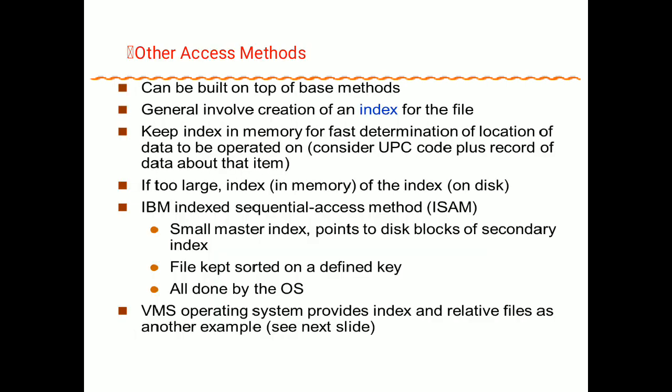Along with sequential and direct access methods, there is another method called the index method to access files. This index method is very similar to the index at the back of a book. We build an index on top of the file, which generally involves creation of an index for the file. The index is kept in memory for fast determination of the location of data to be operated on — just like searching a topic alphabetically in a book's index. If data is too large, an index of the index is maintained, meaning there is one index and within it another index.